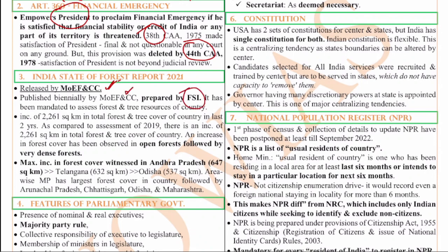From the important findings of this report: there is an increase in forest cover - generally we hear forest cover is decreasing, but here the forest cover has increased, though very marginally. The maximum increase is witnessed in Andhra Pradesh, followed by Telangana at 2nd and Odisha at 3rd. Don't confuse this with the maximum forest cover - maximum forest cover is in Madhya Pradesh, followed by Arunachal Pradesh, Chhattisgarh, Odisha, and Maharashtra. Highest increase is in Andhra Pradesh; highest forest cover is in Madhya Pradesh.